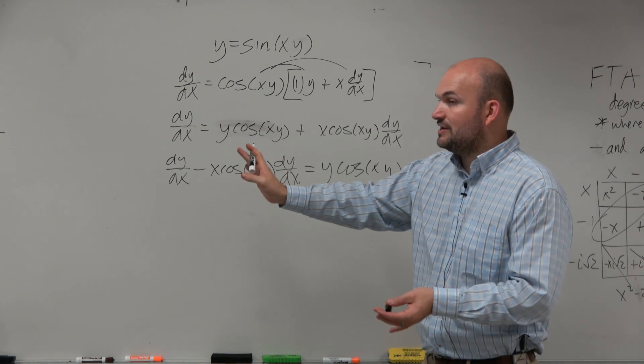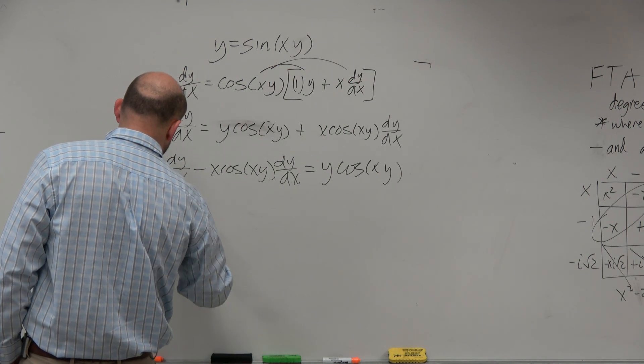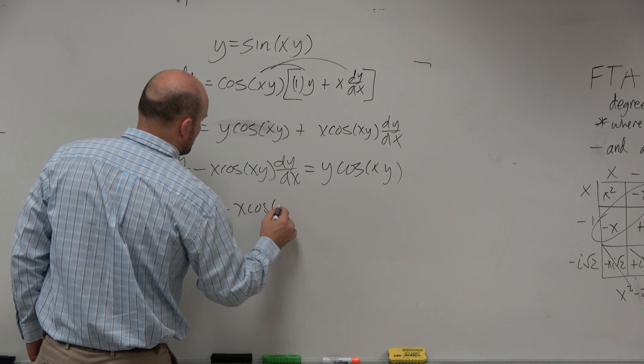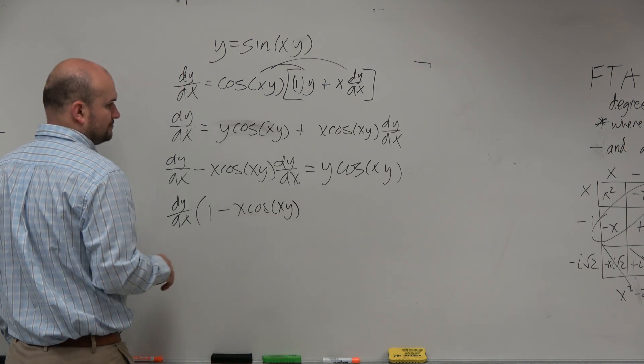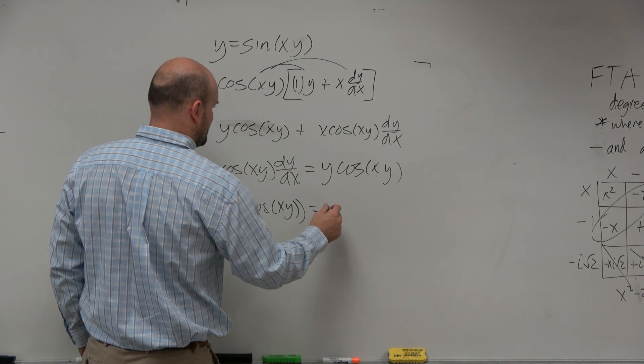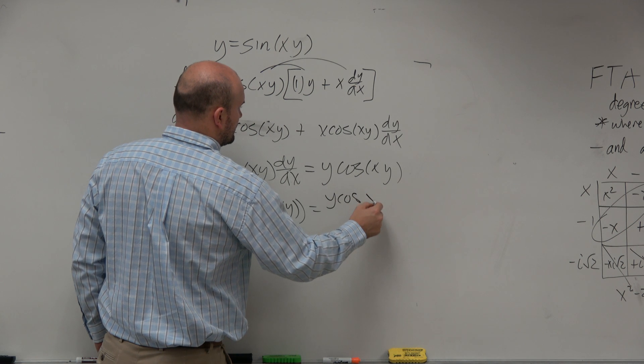Then I can factor it out. And when I factor that dy/dx out, I'm left with 1 minus x cosine of xy. That equals y cosine of xy.